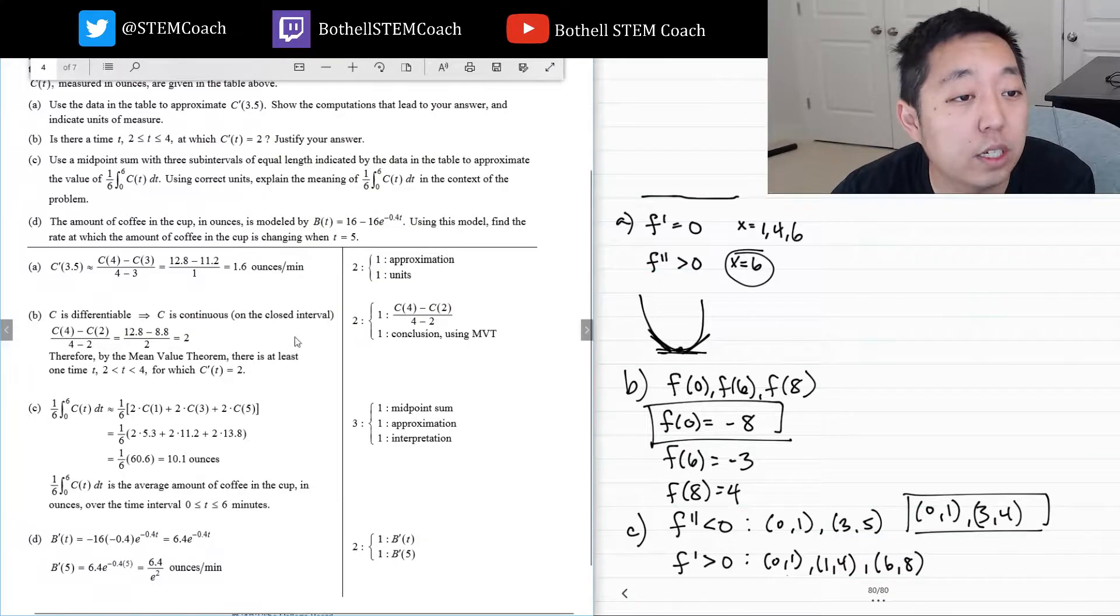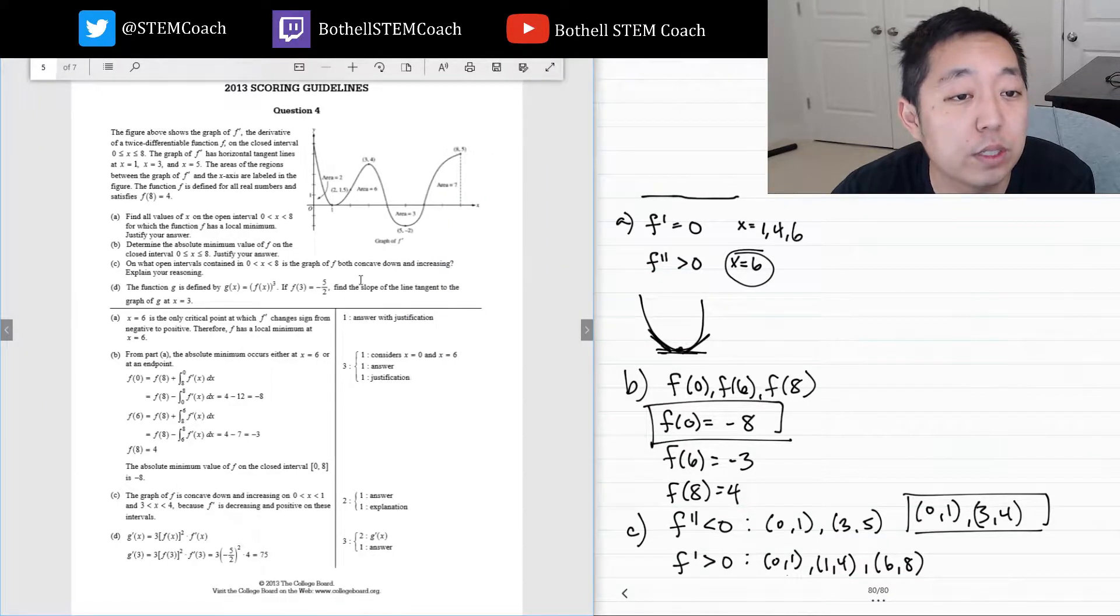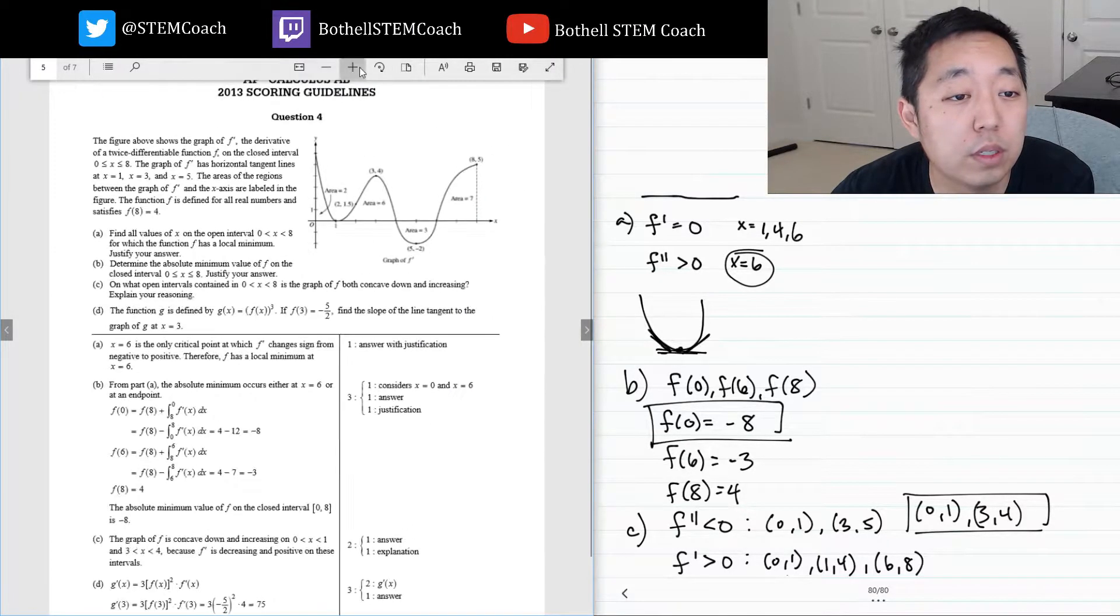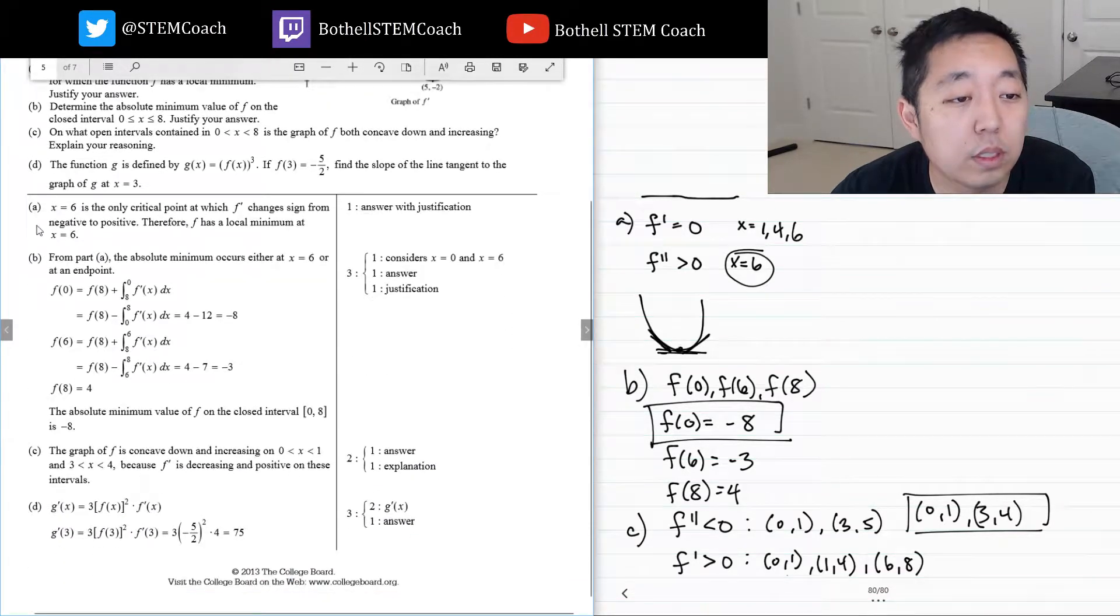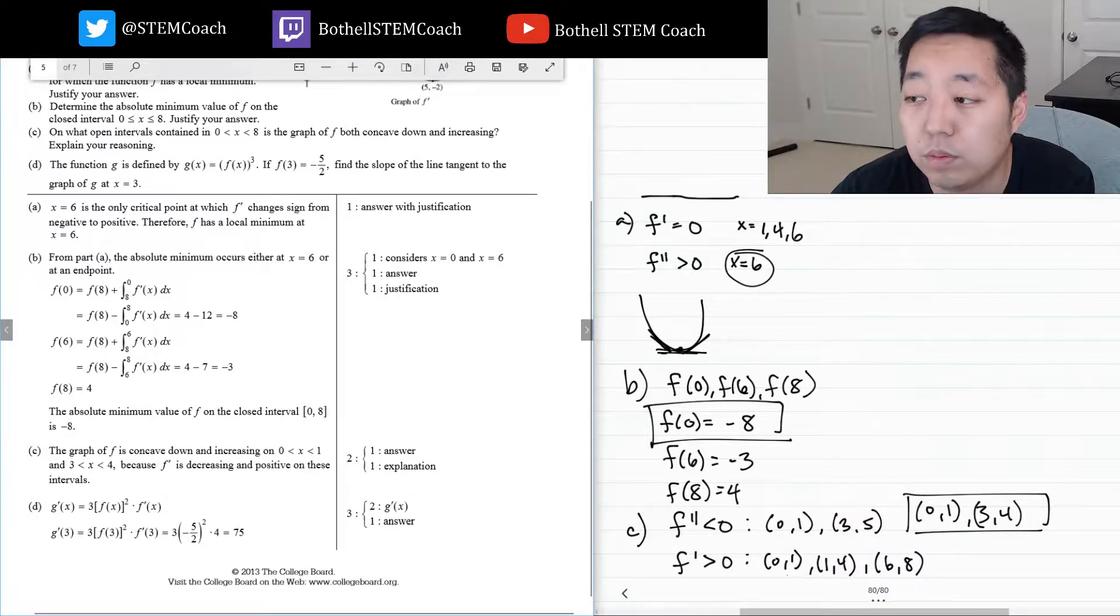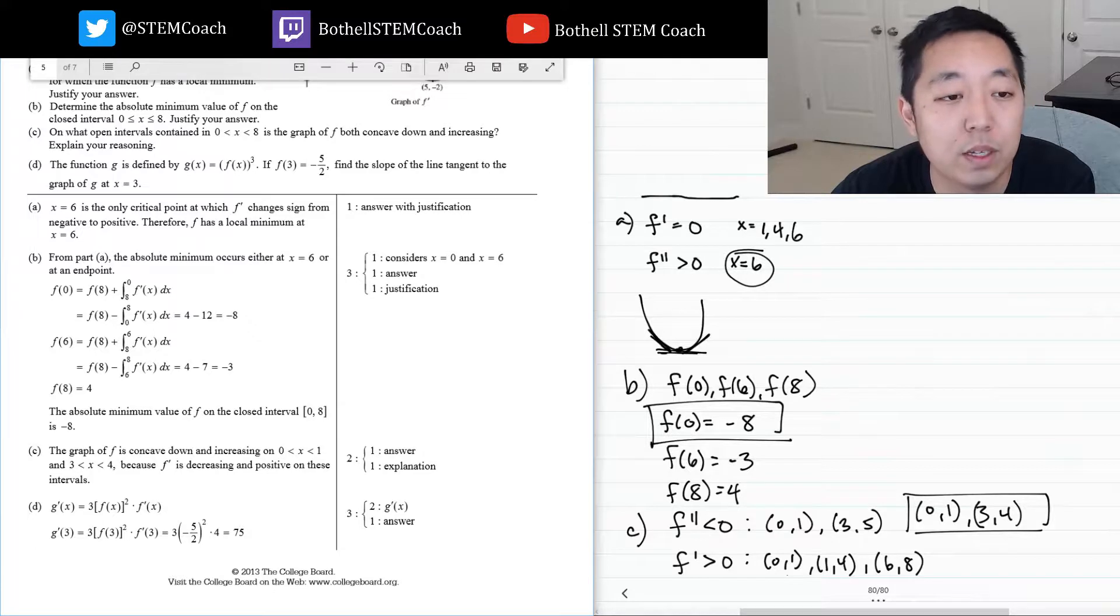So let's look at the previous question. X equals 6 is the only critical point where f changes sign from negative to positive, therefore f has a local minimum at x equals 6. Good. Absolute minimum is negative 8. I considered 0 and 6, we got minus 8, minus 3, and 4. Good. Part c: 0 to 1 and 3 to 4. Good. And then 75. Got all this right. Thanks for watching, and I'll see you guys in the next free response question.